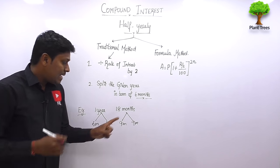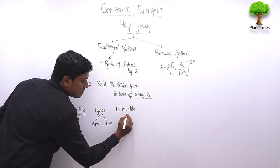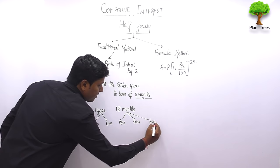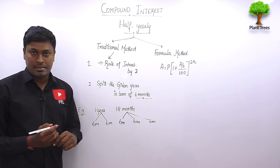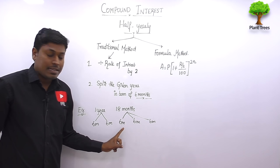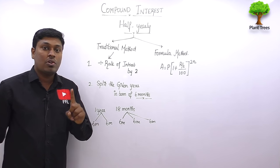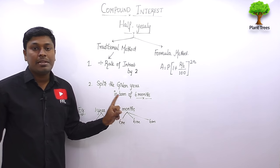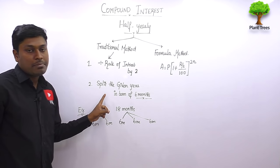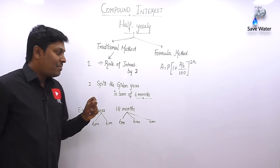For example, if the time duration is 18 months, most students make the mistake of splitting it as nine months and nine months — that is exactly wrong. The meaning of half-yearly is six months. So we need to split 18 months as three six-month periods: six plus six plus six equals 18 months. Find interest three times, adding to principal each time.